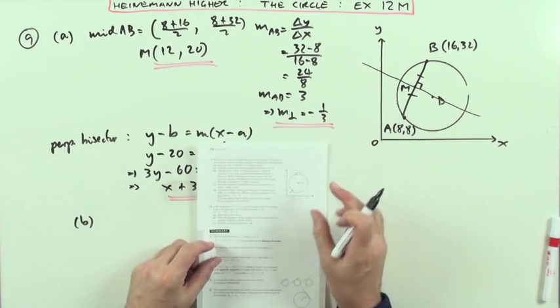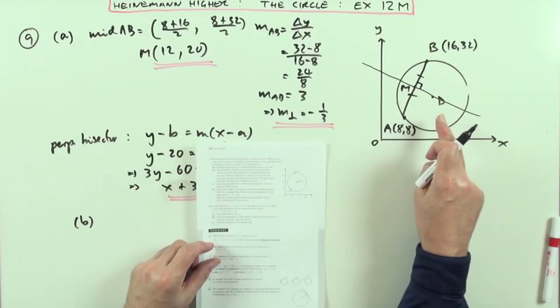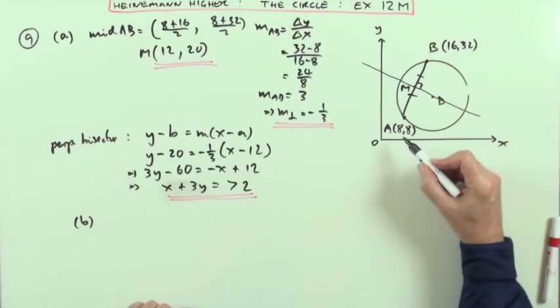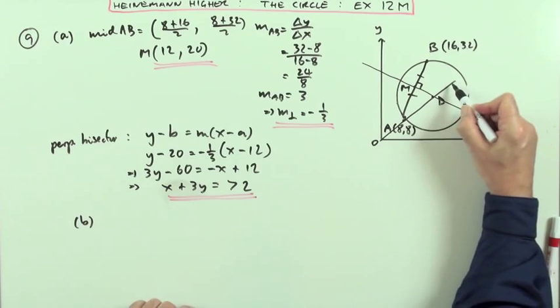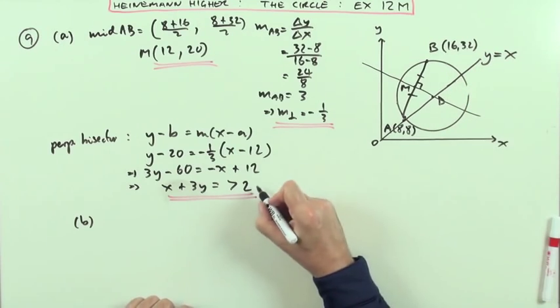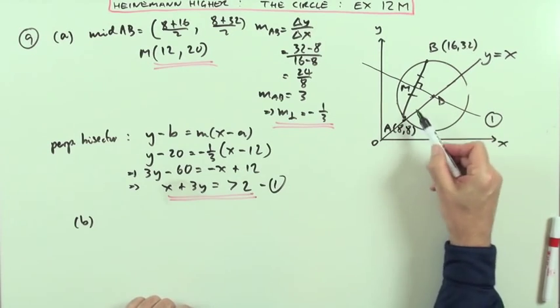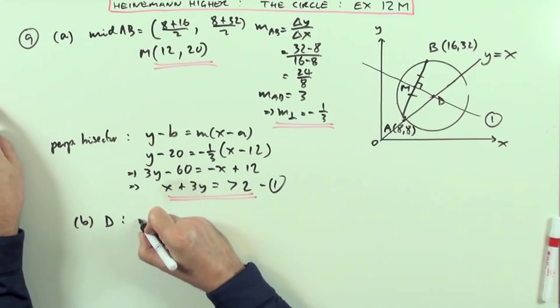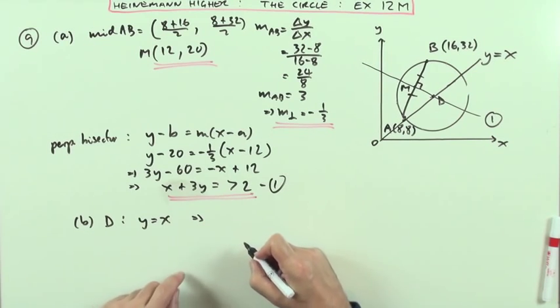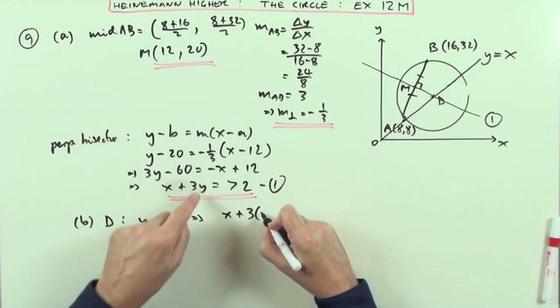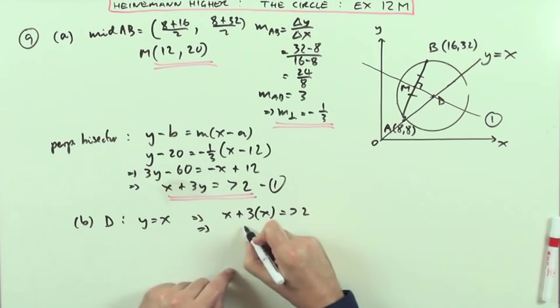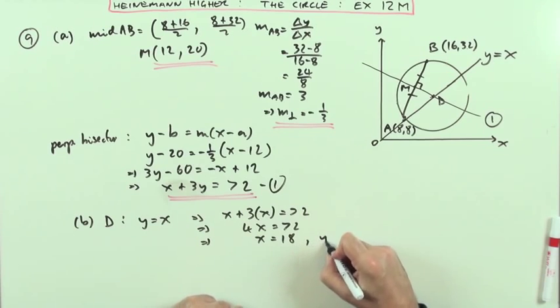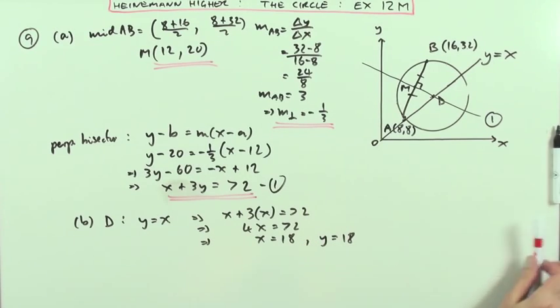Now part B says the point D is the center of the circle. It's equidistant from the axes, which means it must lie on the line y = x. This is point (8,8), so it definitely lies on the line y = x. If I call that equation 1, then D must be the intersection of y = x and equation 1. So I've got x + 3x = 72, so 4x = 72, x = 18. And of course, y also equals 18 because y = x. So D is the point (18,18).